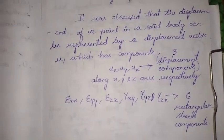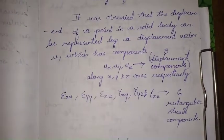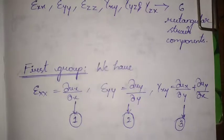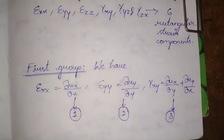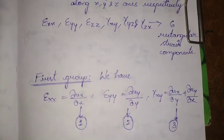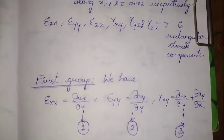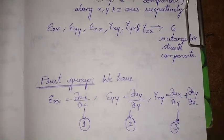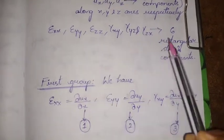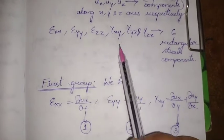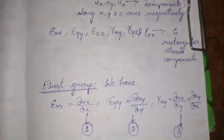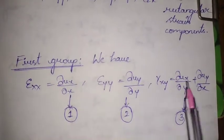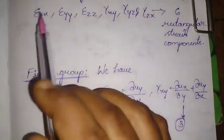When deriving the six compatibility conditions, we divide them into a first group and a second group. The first group contains three compatibility conditions and the second group contains the other three. The six rectangular strain components can be obtained by simply differentiating the displacement terms.